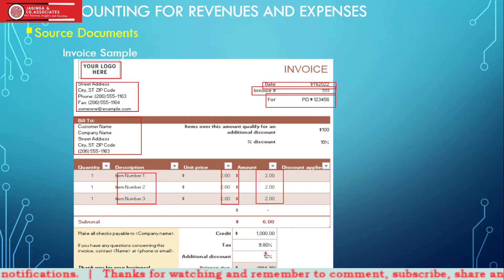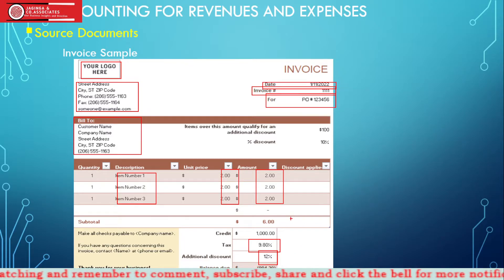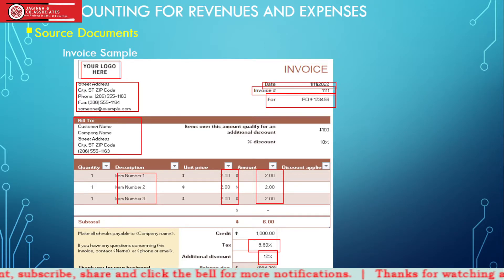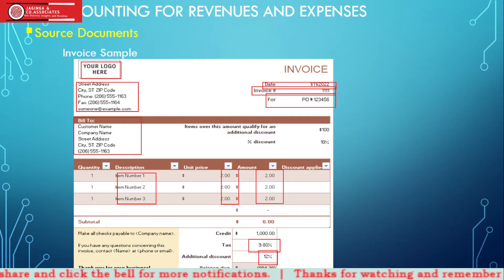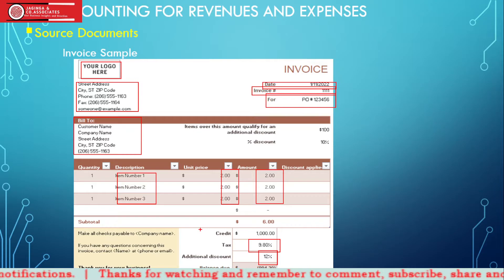If there's a discount, you must include the discount value and discount percentage. If there's a tax involved like VAT, you must also have those details. So this is just a sample invoice — not a standard invoice, but most of the contents are within. You must have the name of the seller, name of the buyer, invoice number, quantity and items being sold, the amount and total amount payable, and the terms of payment.